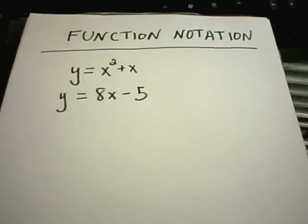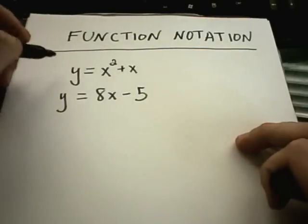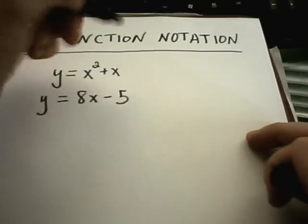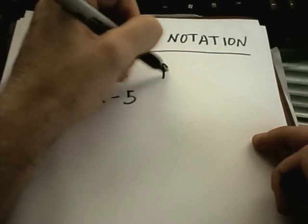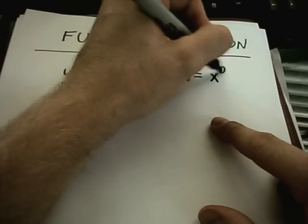The idea is maybe you have a couple of equations that you have to deal with in the same problem. I always thought of function notation as maybe somehow being like a name. So what we're going to do instead of using y, we're going to replace it with f, so it says f of x equals x squared plus x.